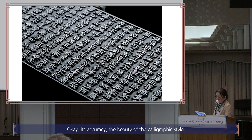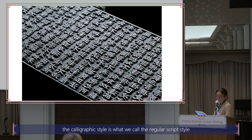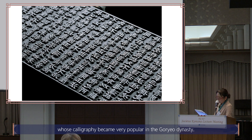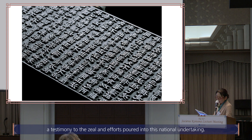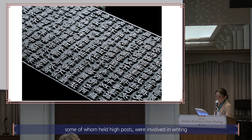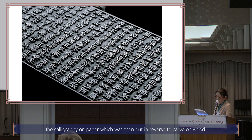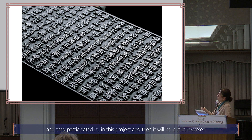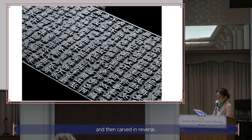The calligraphic style follows what is called regular script, or Kai Shu in Chinese, in the Ouyang Shun style, which became very popular in the Koryo dynasty. The exquisite carving of the wood blocks is simply astonishing, testimony to the zeal and efforts poured into this national undertaking. According to scholar Yigubo, leading calligraphers who held high posts were involved in writing the calligraphy on paper, which was then put in reverse to carve on wood. The wood itself was apparently boiled in salt water to get rid of impurities, then carefully dried in breezing shade, and the corners were reinforced with metal to prevent warping.